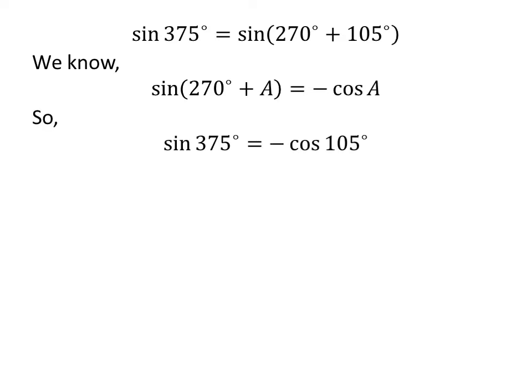So, sine of 375 degrees is equal to minus cosine of 105 degrees. Again, 105 degrees is equal to 60 degrees plus 45 degrees. So, sine of 375 degrees is equal to minus cosine of 60 degrees plus 45 degrees.